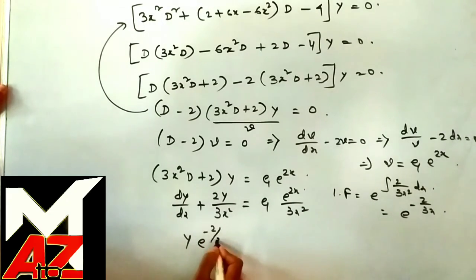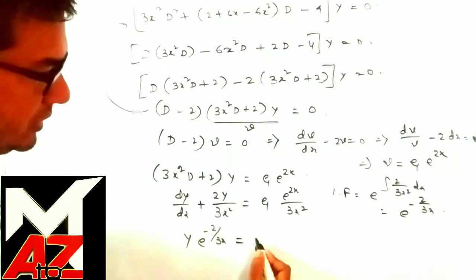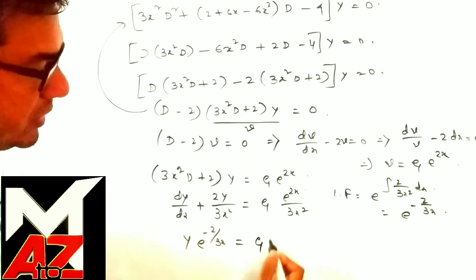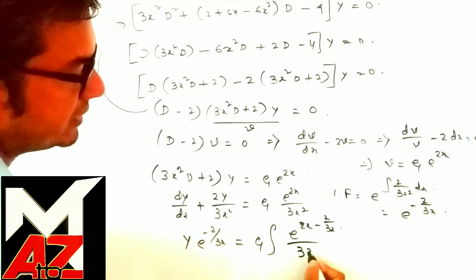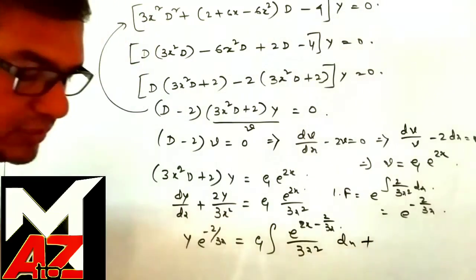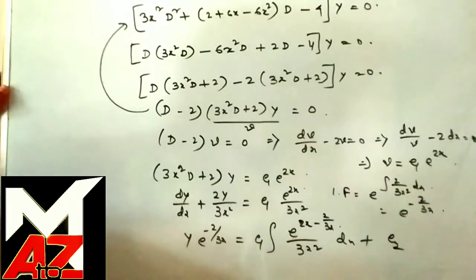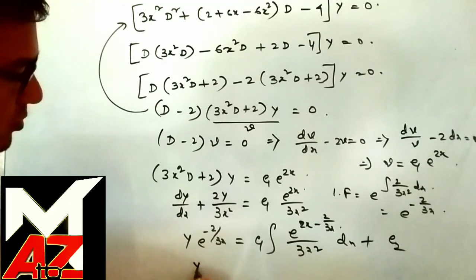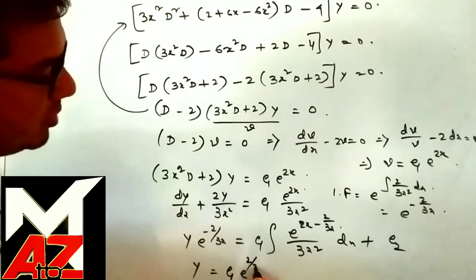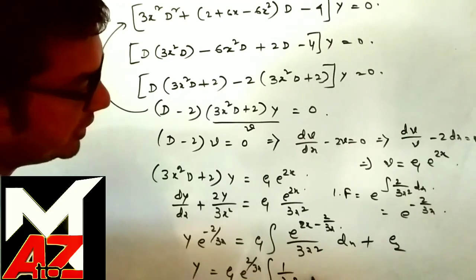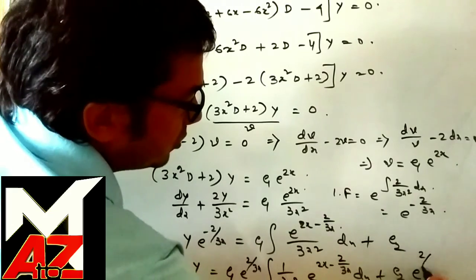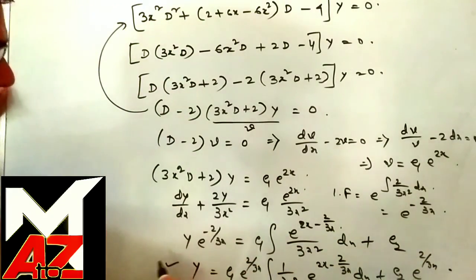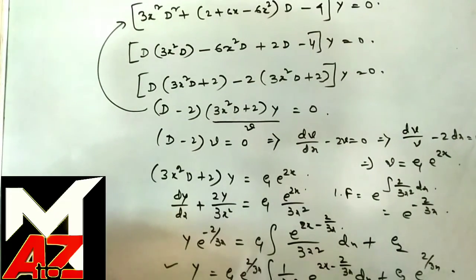Multiplying by the integrating factor and integrating, we get y·e^(−2/(3x)) = C₁·∫(1/(3x²))·e^(2x − 2/(3x))dx + C₂. This integral cannot be expressed in closed form, so the complete solution is y = C₁·e^(2/(3x))·∫(1/(3x²))·e^(2x − 2/(3x))dx + C₂·e^(2/(3x)). This is the complete solution of the second example.